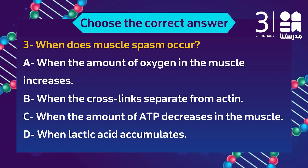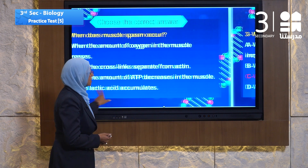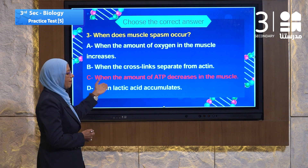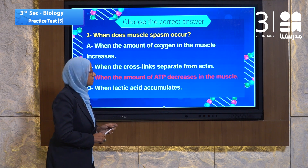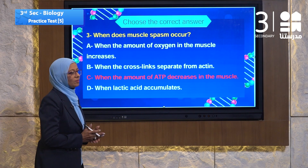Question number three: when does muscle spasm occur? Muscle spasm means contraction of the muscles. The choices are: a) when the amount of oxygen in the muscle increases, b) when the cross-bridges separate from actin, c) when the amount of ATP decreases in the muscles, d) when lactic acid accumulates. The answer is c — that means when the amount of ATP decreases in the muscles, so the muscle goes into spasm.